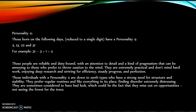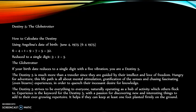The Personality 4 — those born on the following days reduced to a single digit have a Personality 4: 4, 13, 22, and 31. For example, 31 is 3 plus 1 equals 4. These people are reliable and duty-bound with an attention to detail and a pragmatism that can be annoying to those who prefer to throw caution to the wind. They are extremely practical, don't mind hard work, and enjoy deep research, striving for efficiency, steady progress, and perfection. Those with a Personality 4 are down-to-earth types with a strong need for structure and stability, preferring regular routines and liking everything in its place. They find disorder extremely distressing and are sometimes considered to have bad luck — which could be the fact that they miss out on opportunities by not seeing the forest for the trees.